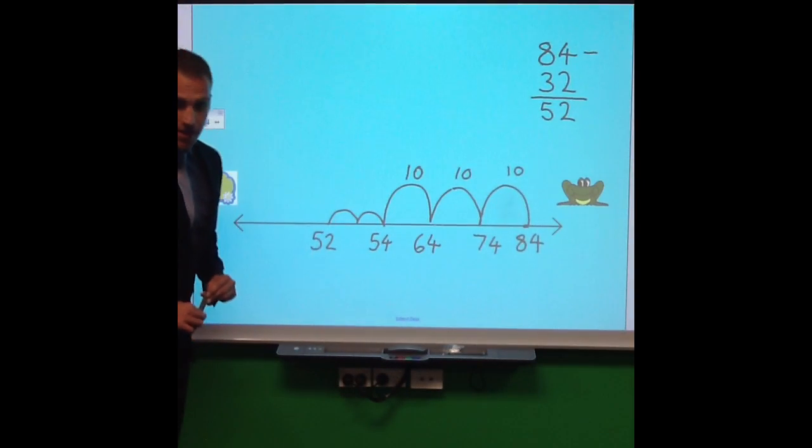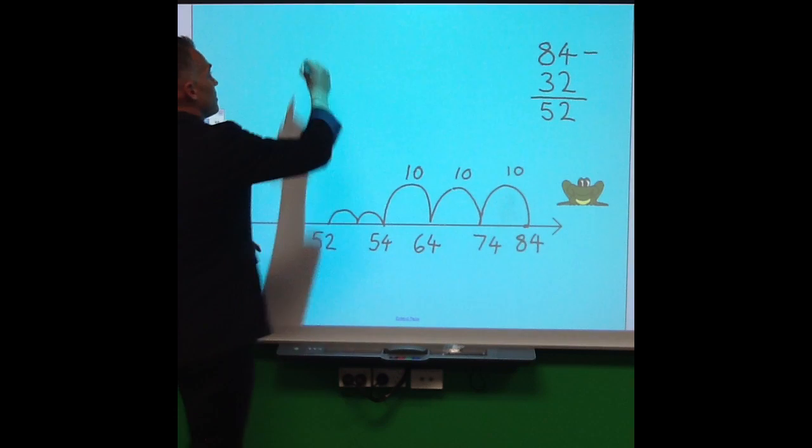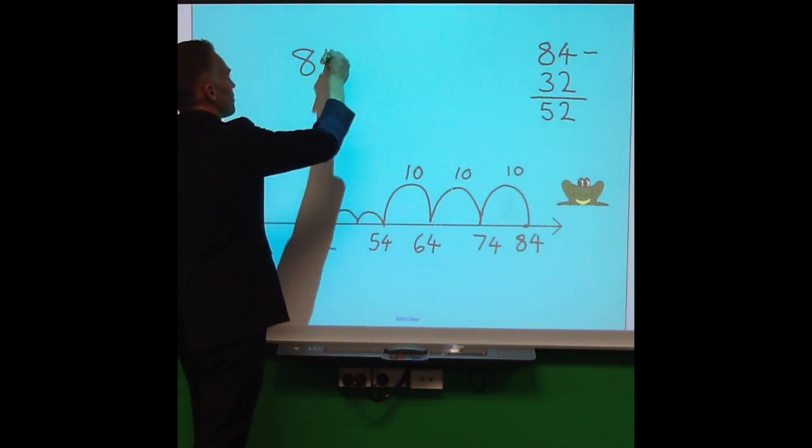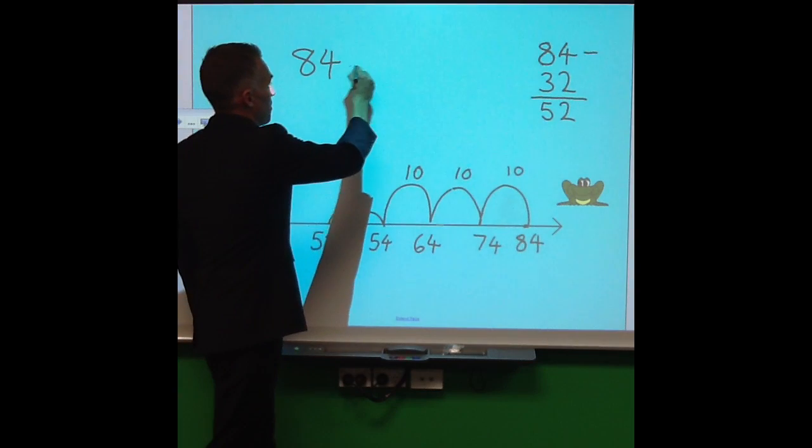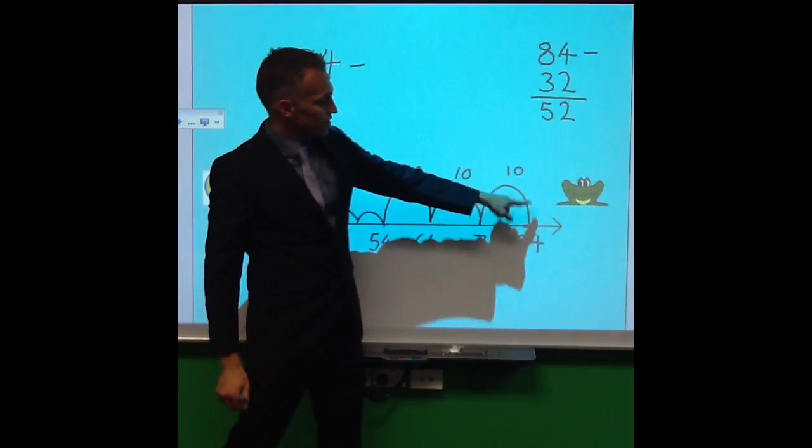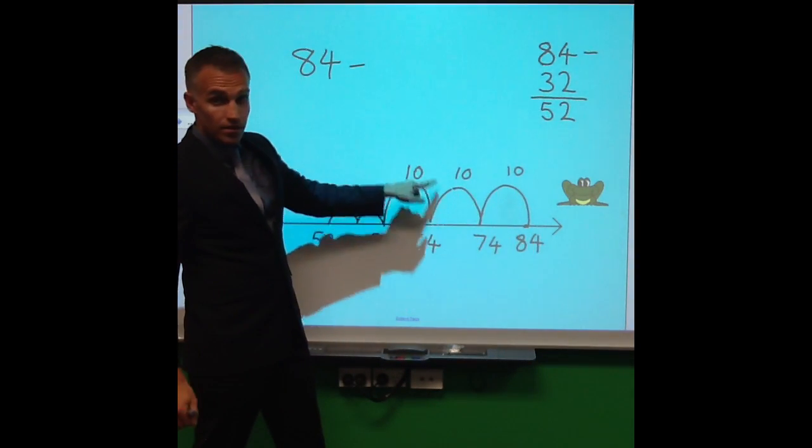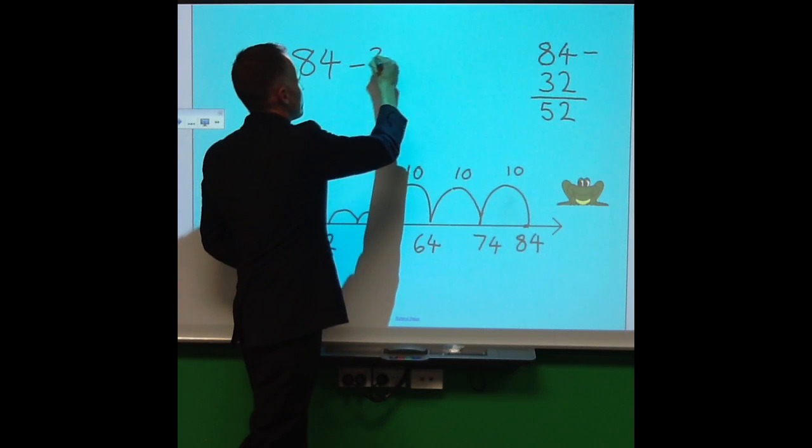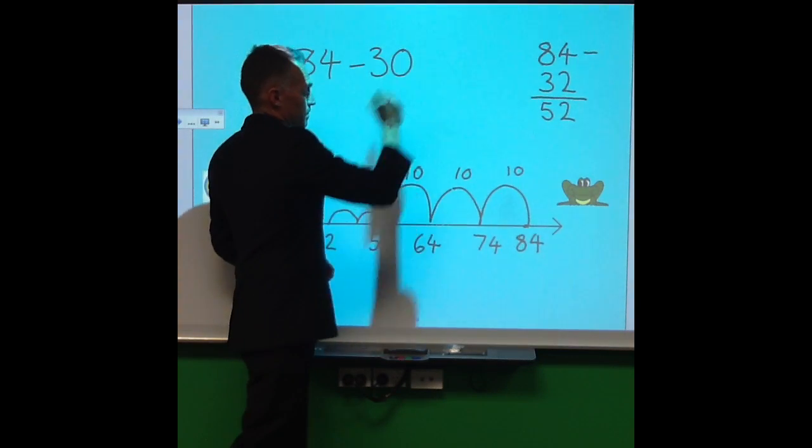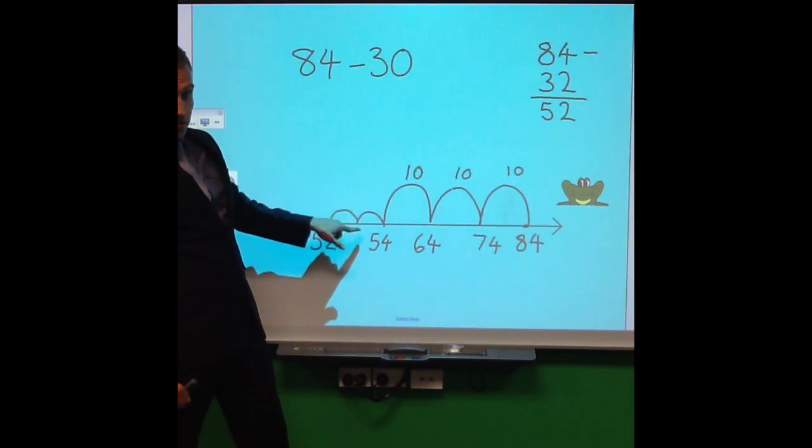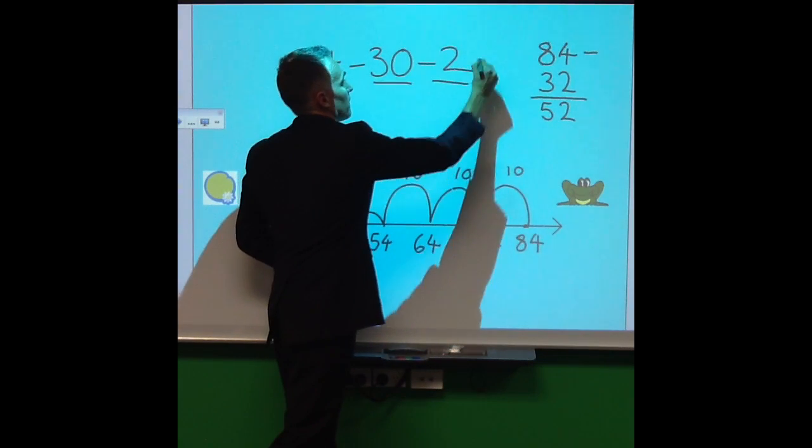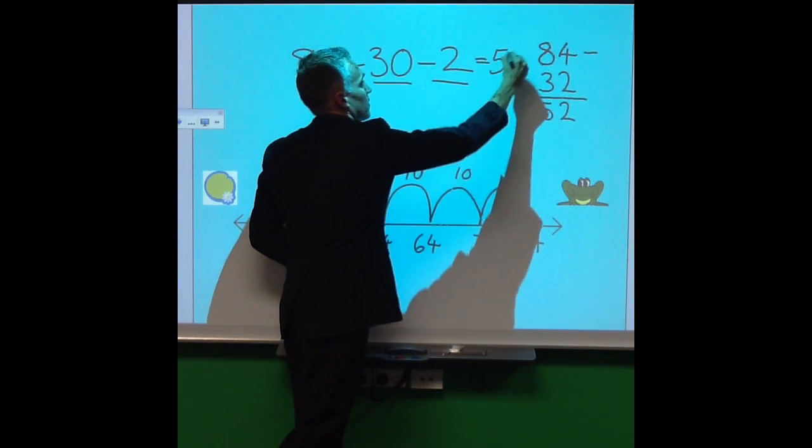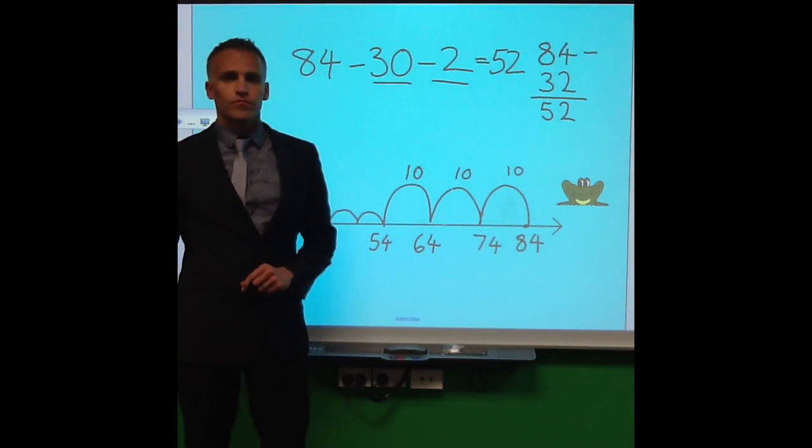Okay, so there's the number line. And the way we write that is 84, that's where we started, minus 10, 20, 30, minus 2, equals 52. Jump strategy.